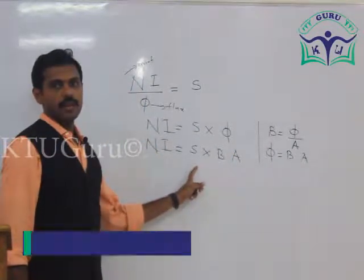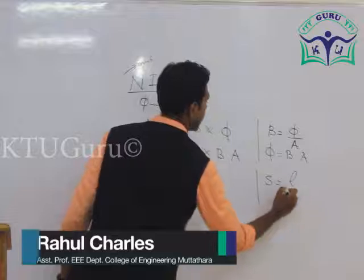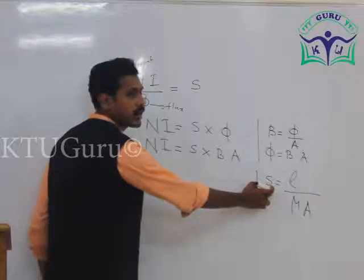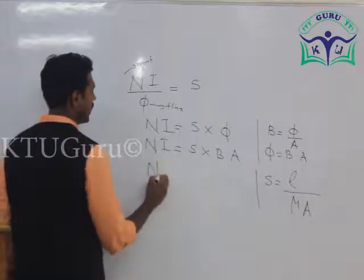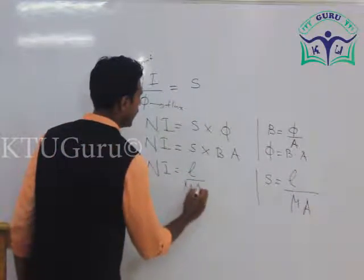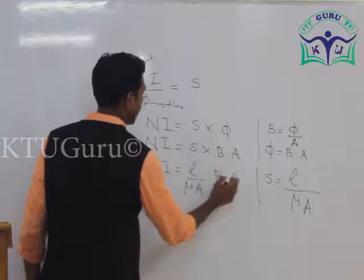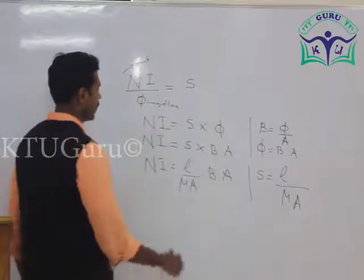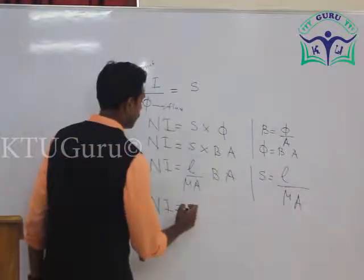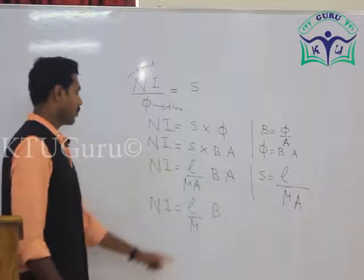We know the relation of reluctance: S equals L divided by mu times A. Substituting the relation of S in this expression, NI equals L by mu A into B times A. This A and A get cancelled. Therefore, NI equals L by mu into B, or B times L by mu.